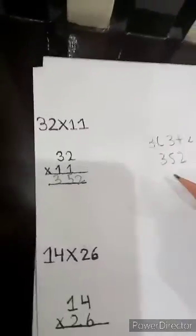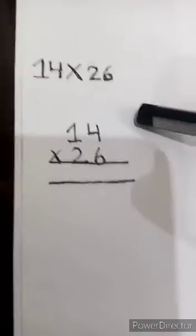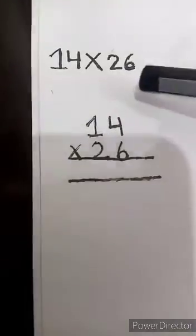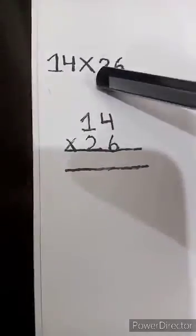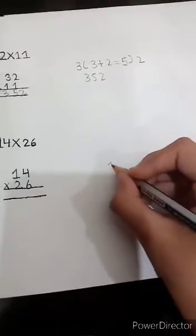It is very easy. Our trick 2 is how to multiply 2-digit numbers. I am taking 14 multiplied by 26. First multiply 1 into 6.